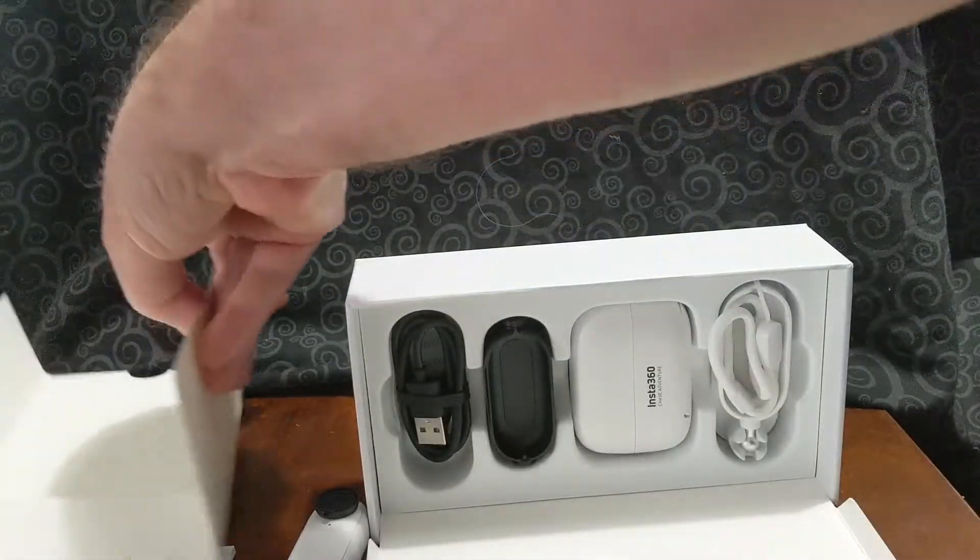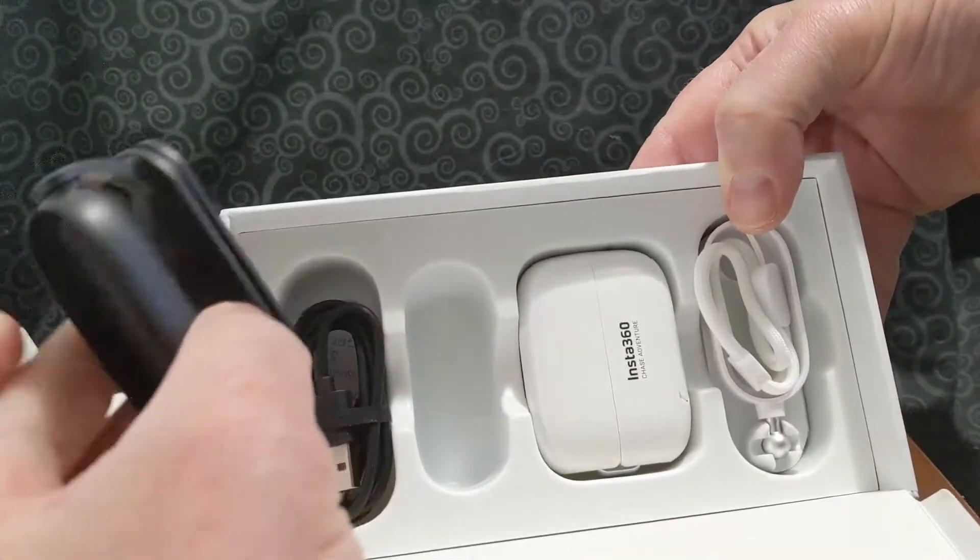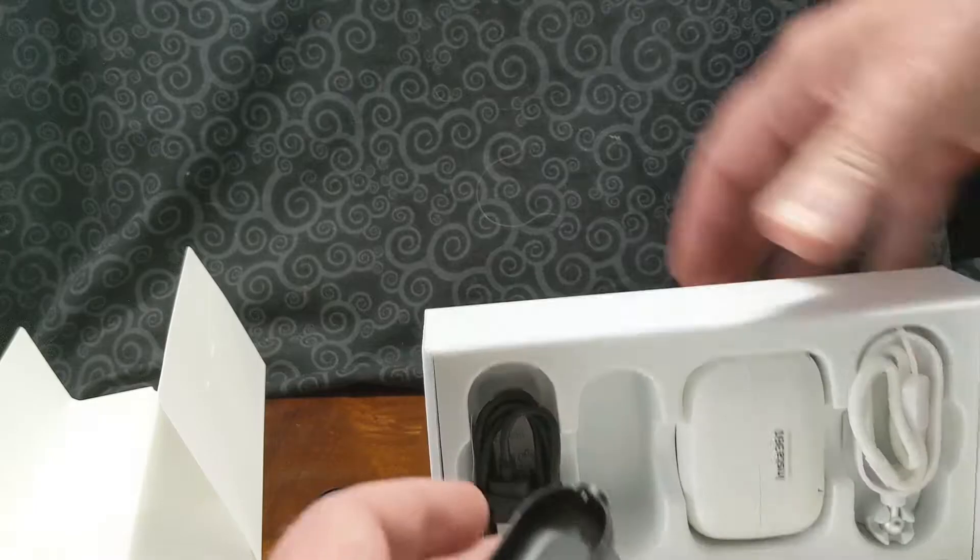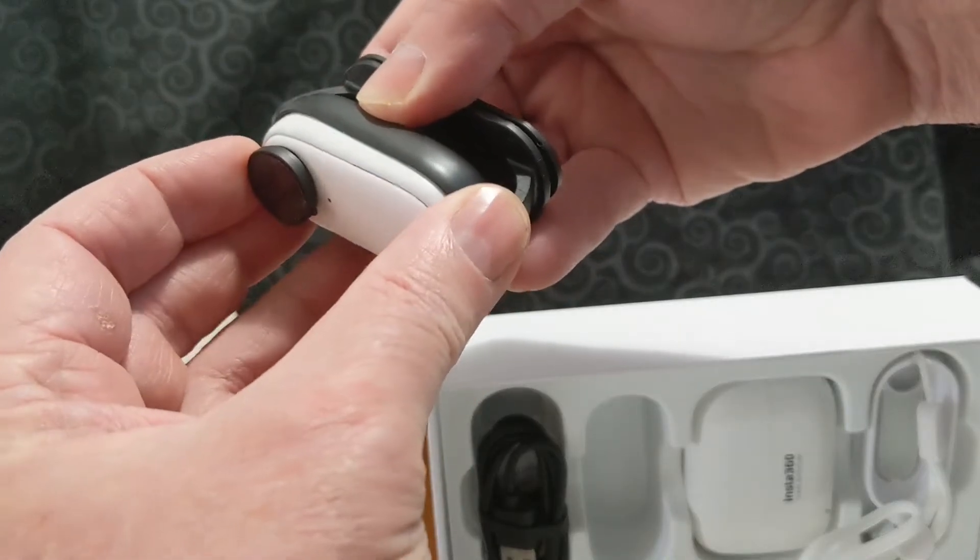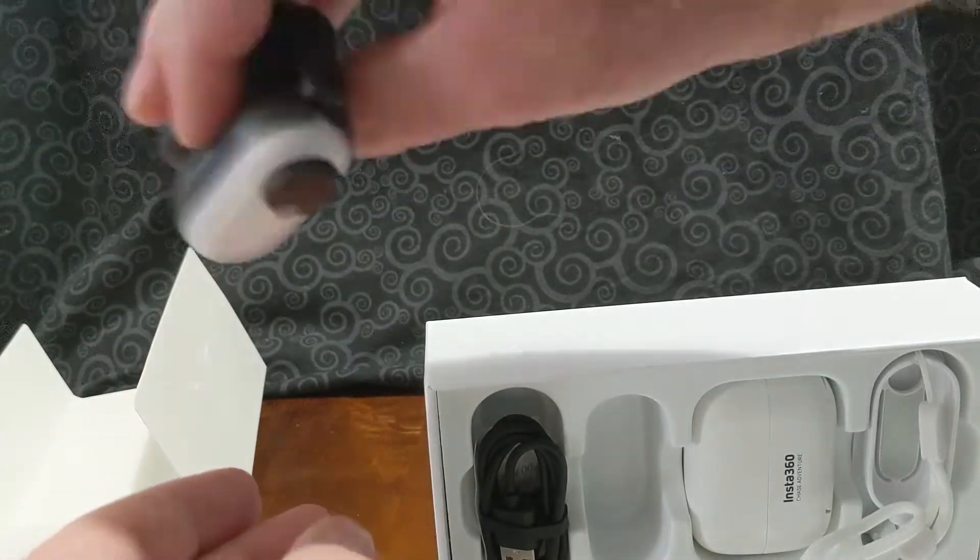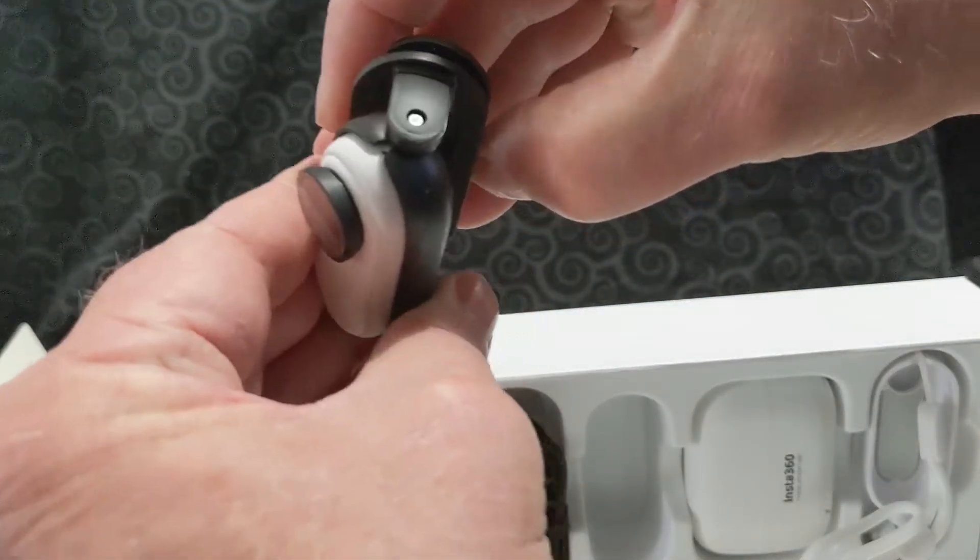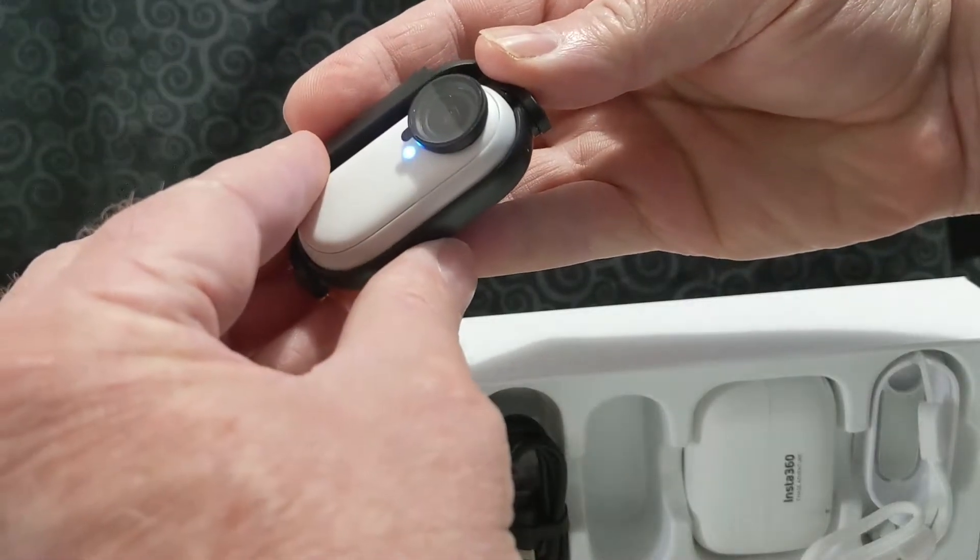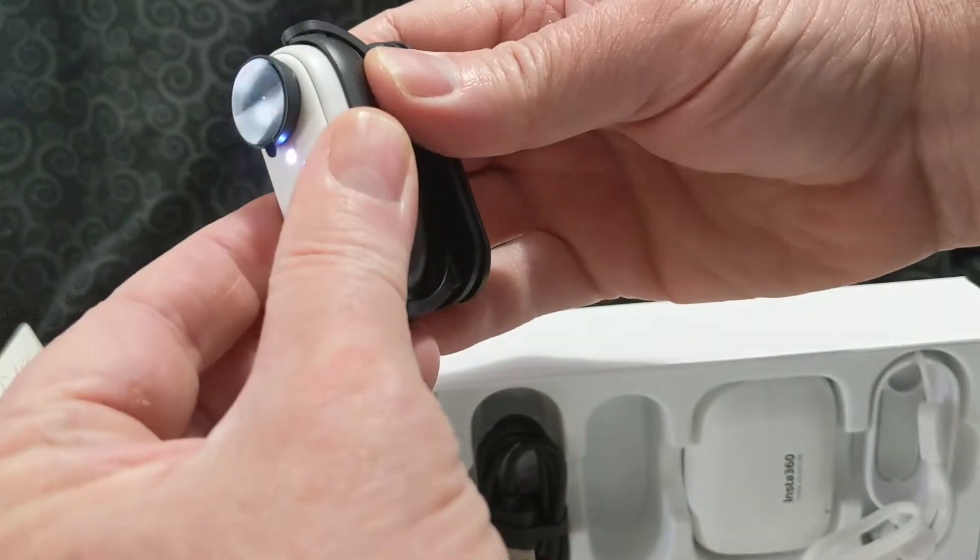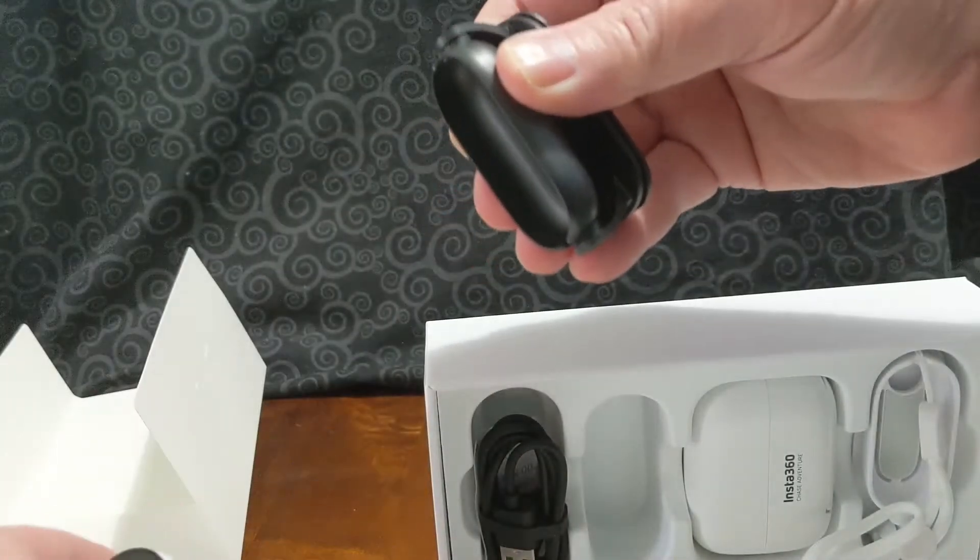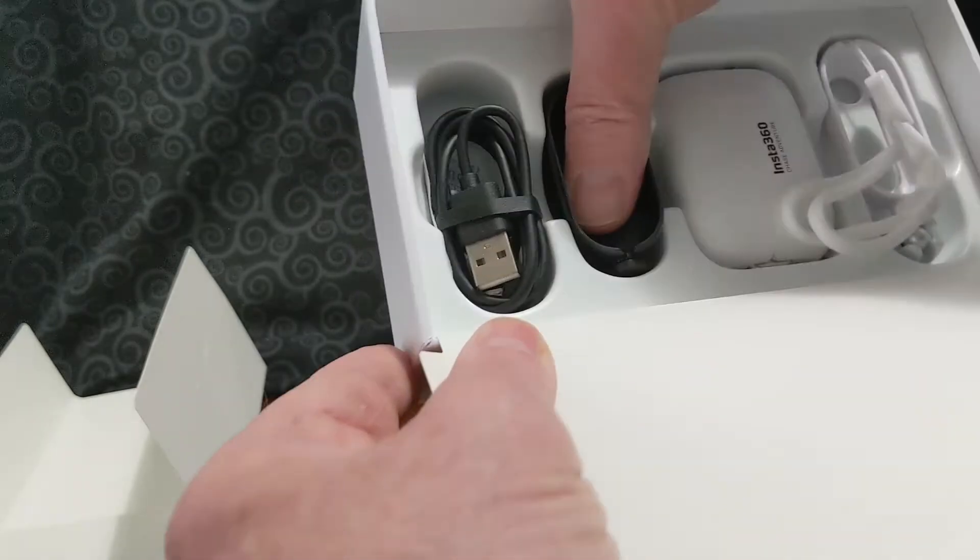Now inside the case you get, this is the clip-on mount. I wonder if that just, yep, it's magnetic. That holds in there really well too. You could actually clip this onto your hat or whatever. Oh wow, it just popped on. It kind of did a little vibrate and came on. I'll have to figure that one out later. So we have that.